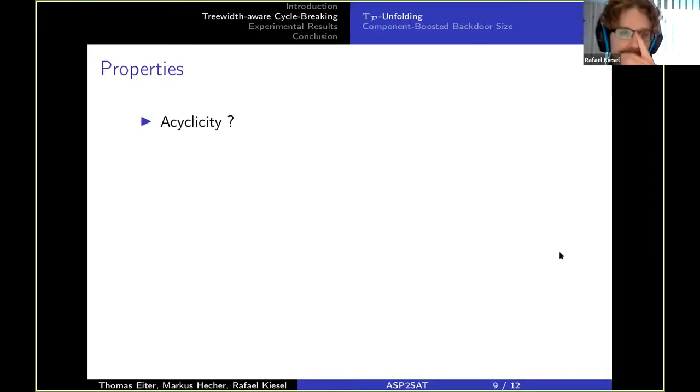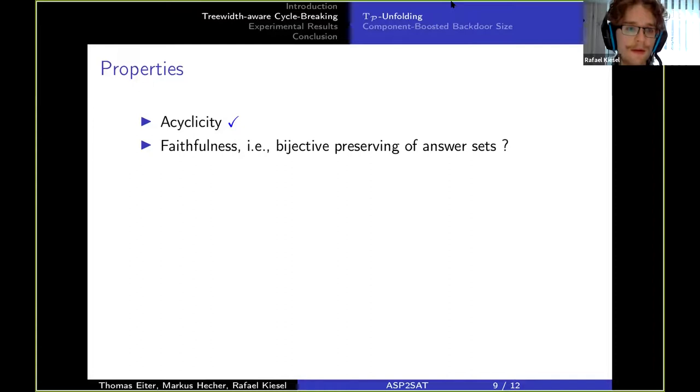And furthermore it takes for the positive atoms the last introduced copy of them, and for the negative atoms it just keeps them the same. Now this translation, what properties does it have? The first thing we wanted was acyclicity and that's always given.